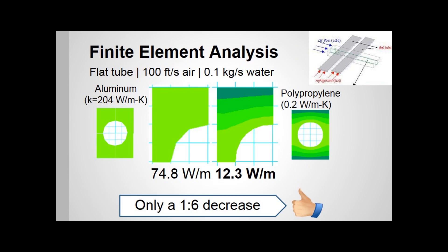Finite element analysis reveals that air flow over an aluminum flat tube only results in a 6-fold increase in heat transfer compared to polypropylene, even though there is a thousand times difference in conductivity.